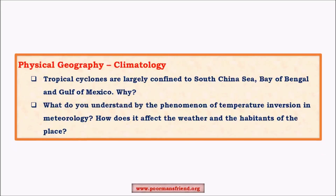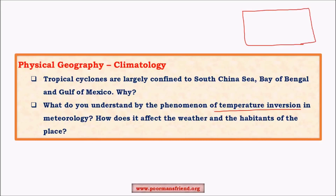For the climatology part of physical geography, a question like 'Tropical cyclones are largely confined to the South China Sea, Bay of Bengal, and Gulf of Mexico — why?' involves many factors influencing cyclone formation. For 'What do you understand by the phenomenon of temperature inversion?' — this concept is mentioned in all core books, so you need to track these important topics. Topics given in boxes in books are particularly important.